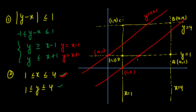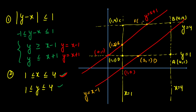Now calculating key intersection points. The line Y = X - 1 intersects Y = 1 at X = 2, giving point (2,1). The line Y = X + 1 intersects X = 1 at Y = 2, giving point E = (1,2). For point F on Y = X + 1 where Y = 4, we get X = 3, so F = (3,4).